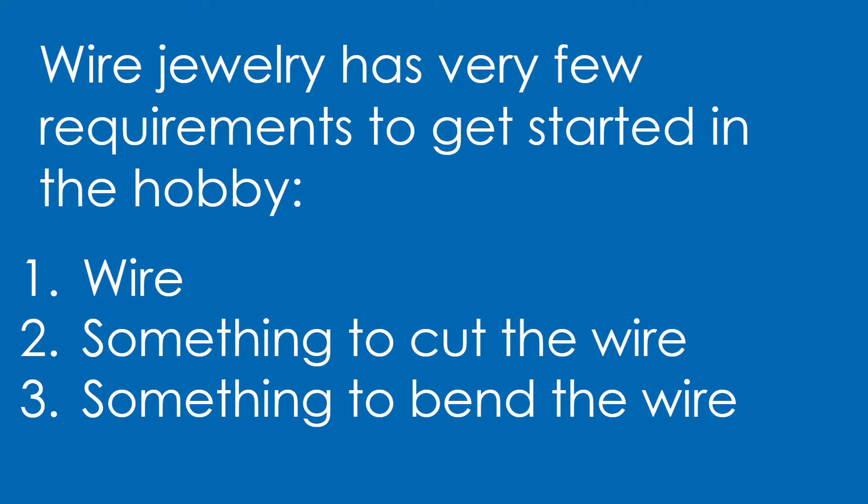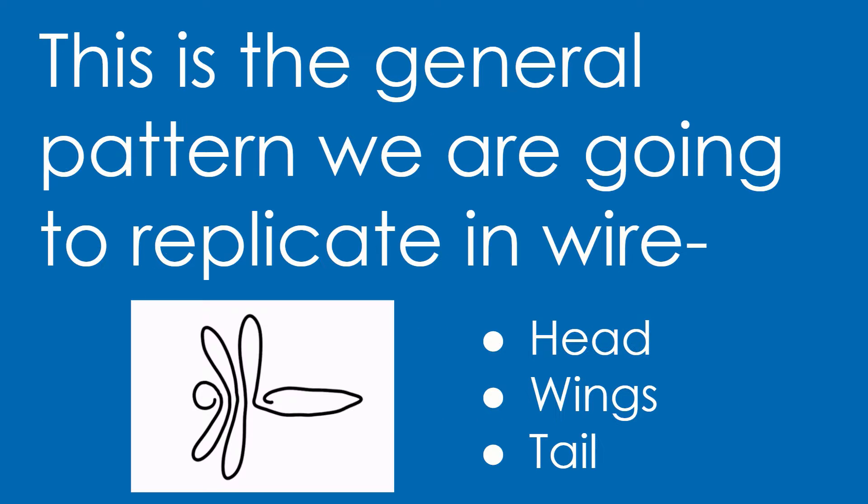Wire jewelry has very few requirements to get started in the hobby. One, you need some wire. Two, you need something to cut the wire. And three, you need something to bend the wire. The dragonfly shape we're going to make today is made entirely with one line. We'll start with a loop for the head, swirl back and forth for the wings, and then loop down for the long tail. There are a lot of reasons to love dragonflies, but today we're going to love them because they are very easy to make out of a single piece of wire.